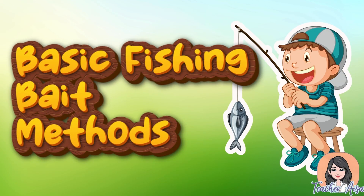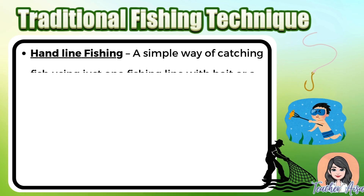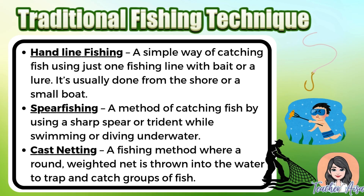Basic fishing bait methods are simple techniques used to attract fish using bait — either natural, like worms, insects, or small fish, or artificial. Under traditional fishing techniques: hand line fishing uses a single fishing line with bait or a lure attached to a hook, done from shore, a pier, or a small boat. Spearfishing involves using a sharp spear or trident to catch fish while swimming, snorkeling, or diving underwater, requiring skill, accuracy, and good timing. Cast netting is a technique where a round net is thrown into the water to trap fish.